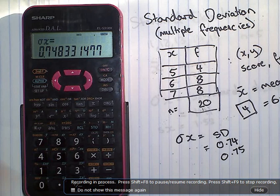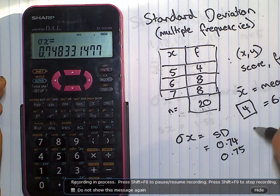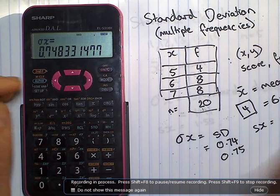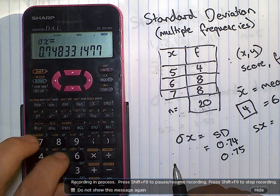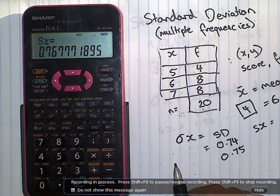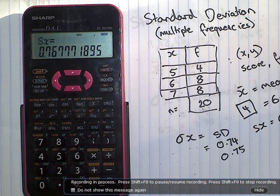If we wanted to look at the sample standard deviation, SX. Alpha, five, equals. Zero point seven six seven.